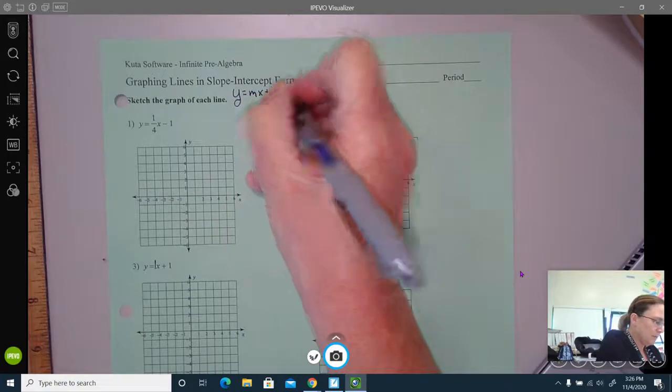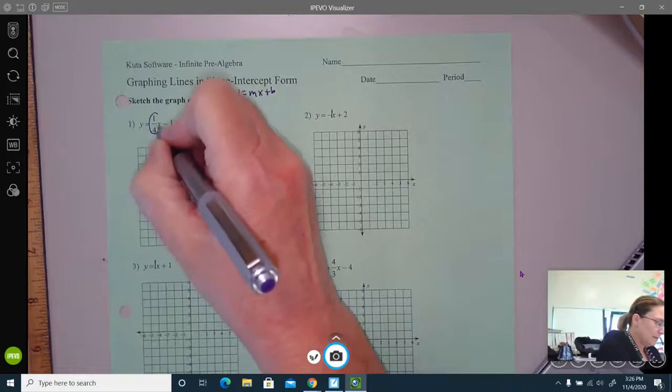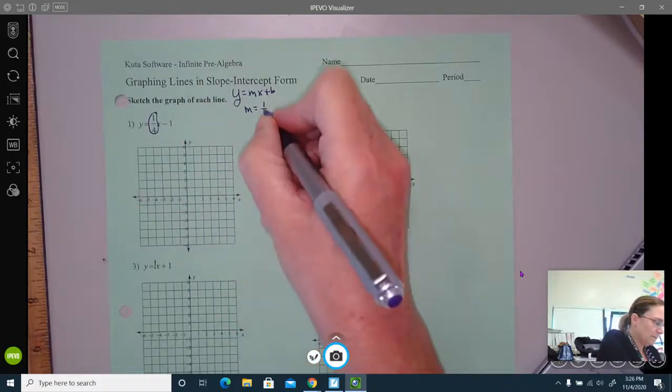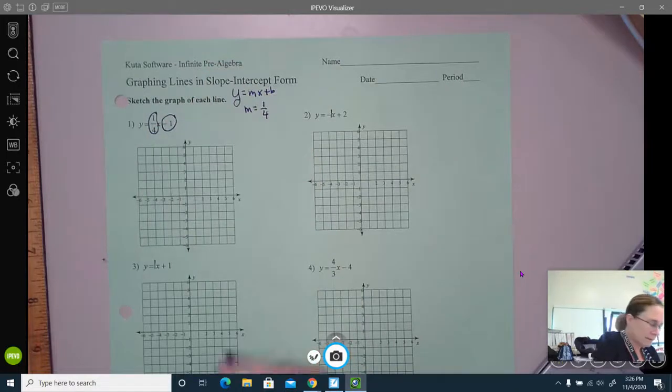The m in this case is here, it's one-fourth. The b is this whole part of the rest of the equation, which is negative one.